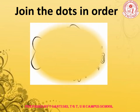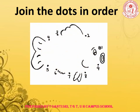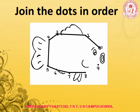Here we have one more picture. Let us join the dots from 1 to 9: 1 to 2, 2 to 3, 3 to 4, 4 to 5, 5 to 6, 6 to 7, 7 to 8, 8 to 9. To complete the picture, we will also join 9 to 1. So here we got a beautiful fish!